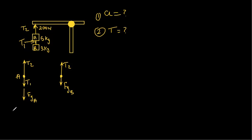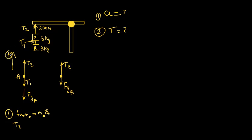For the y-equation for mass A, equation number one: F_net for A equals mass A times the acceleration. Choosing up as positive, tension two is positive, and the forces downward are negative, so: T2 − T1 − Fg_A = m_A × a.